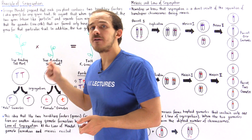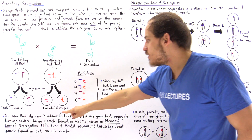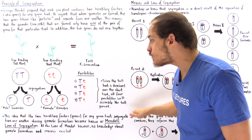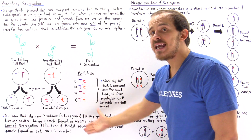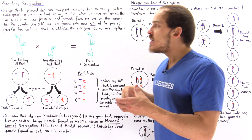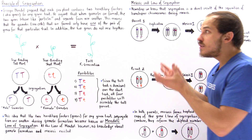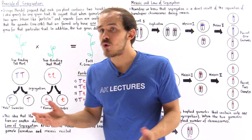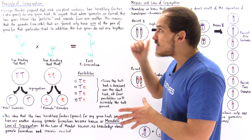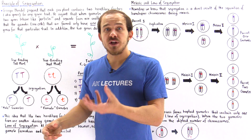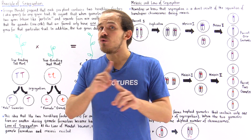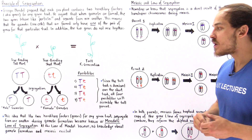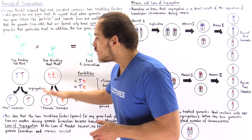This separation process that takes place when gametes are formed is known as the Law of Segregation — the idea that the two hereditary factors, or genes, for any given trait segregate from one another during gamete formation. Remarkably, this was discovered at a time when we knew nothing about meiosis or mitosis. Mendel knew what gametes were and that they fertilize to form a zygote, but nothing about how gametes are actually formed.